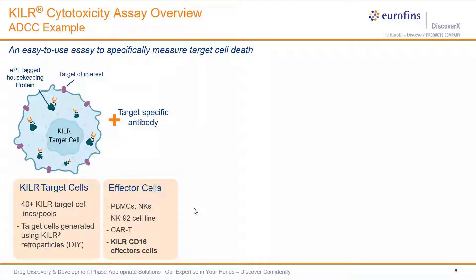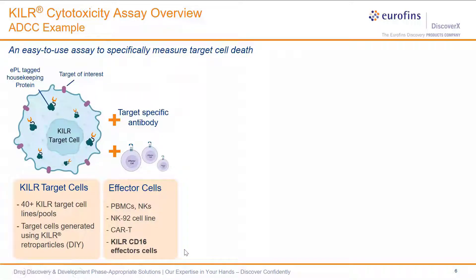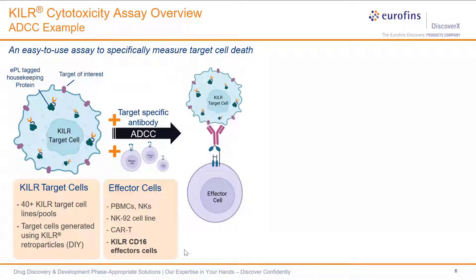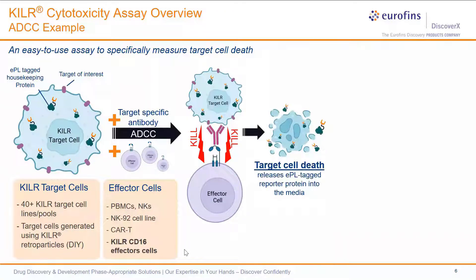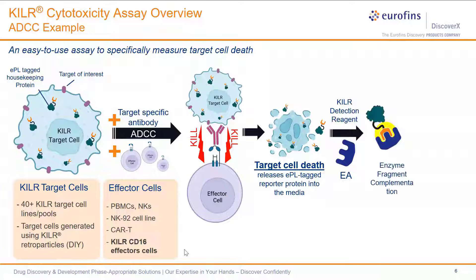The next stage is to opsonize these target cells with the antibody of interest and combine them with the effector cells of interest. The platform is compatible with a variety of effector cells including primary PBMCs, primary NK cells, NK92 cell lines, and CAR-T cells. For ADCC, the killer CD16 effectors are appropriate. Once all components are added together and incubated, the effectors mediate cell death by ADCC, releasing the tagged protein into the media. We then add our detection reagent containing the complementing EA, resulting in complementation and production of luminescence detectable on our plate reader.